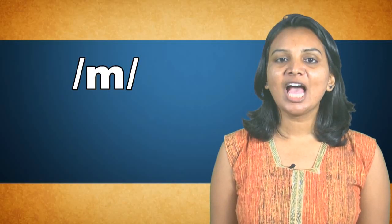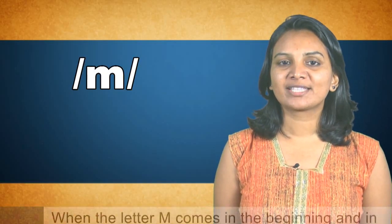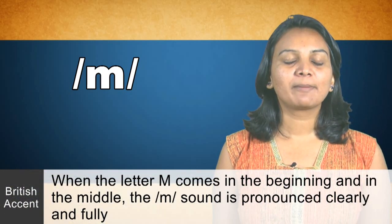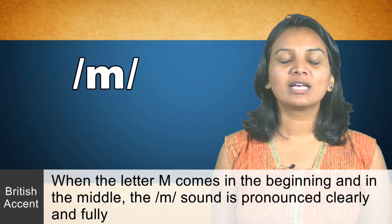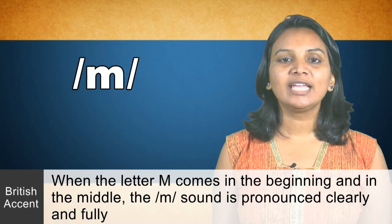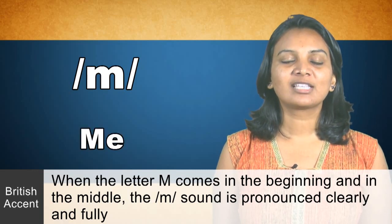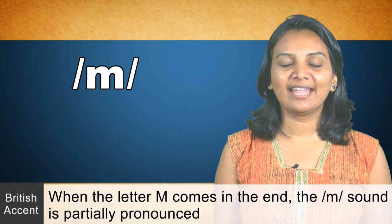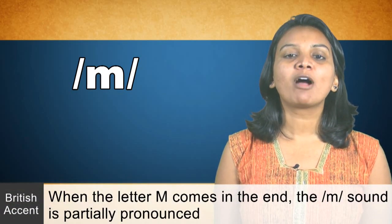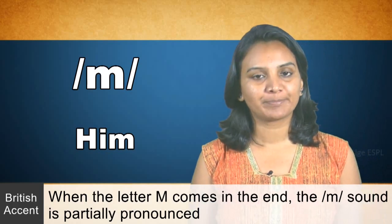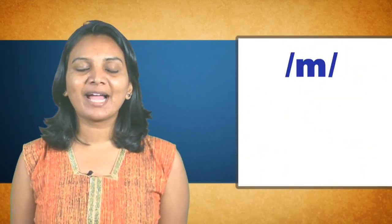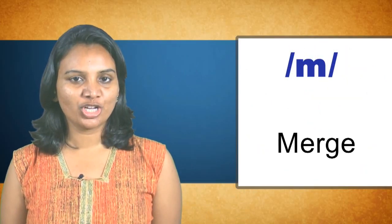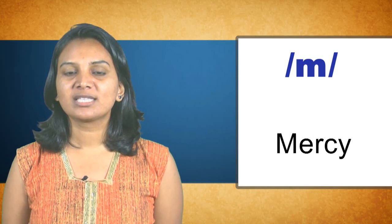Let's see how this sound is used in words. When the letter M comes at the beginning or in the middle of a word, the sound is pronounced clearly and fully — for example, 'me'. When the letter M comes at the end, the M sound is partially pronounced, as in 'him'. Let's take some words for practice: merge, mingle, marriage, mask, master, machine, mercy.